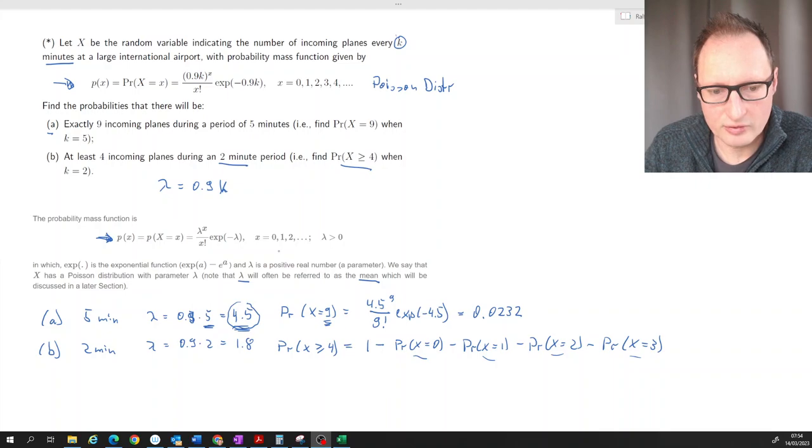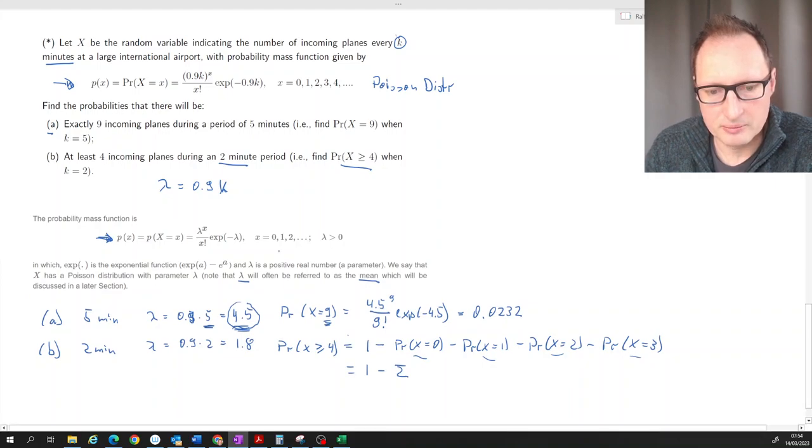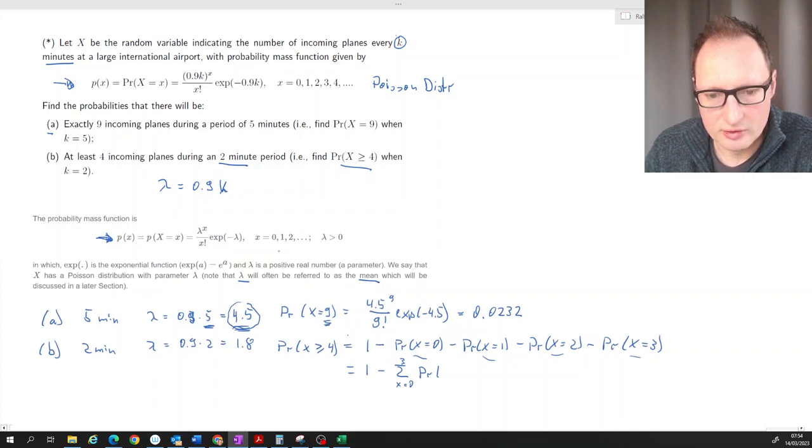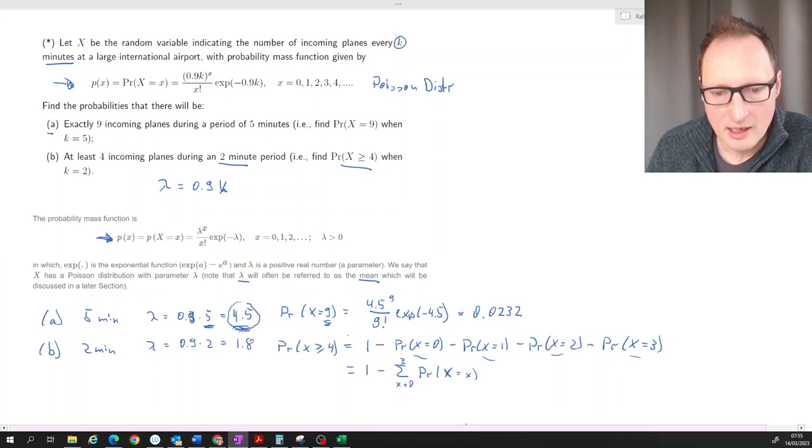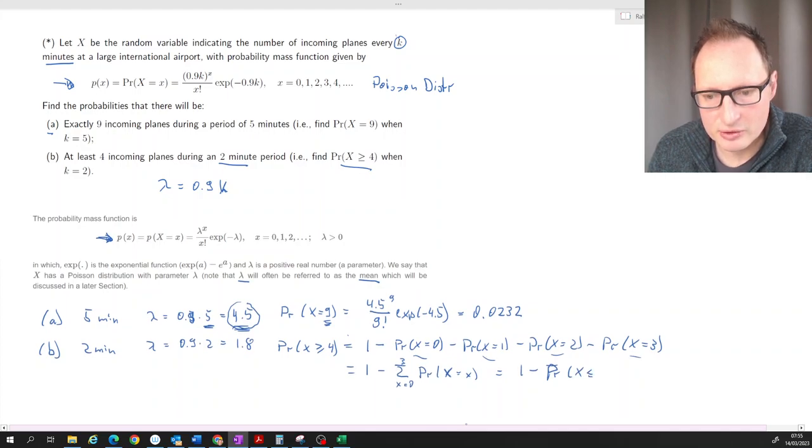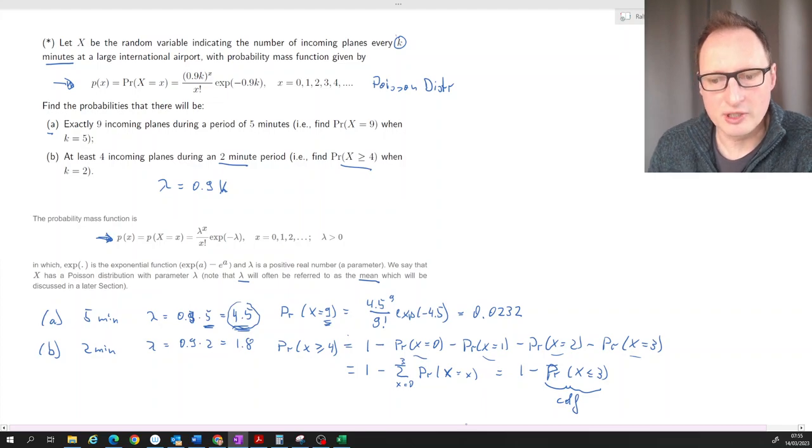Of course you could also think of this being 1 minus the sum from x equals 0 to 3 of the probability of X being equal to little x. And what this is is just 1 minus the probability that x is smaller or equal to 3. Now this of course is just what we know is the CDF, the cumulative density function for that Poisson distributed random variable taking value smaller or equal to 3.